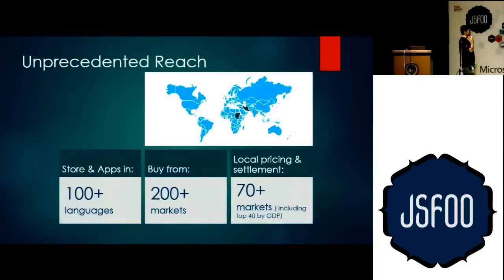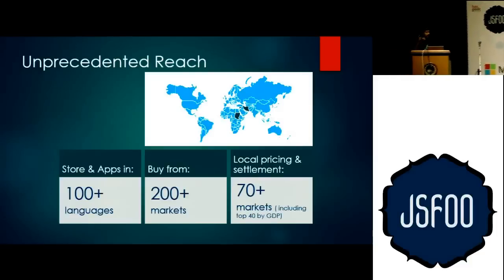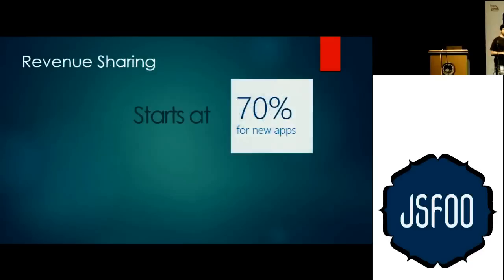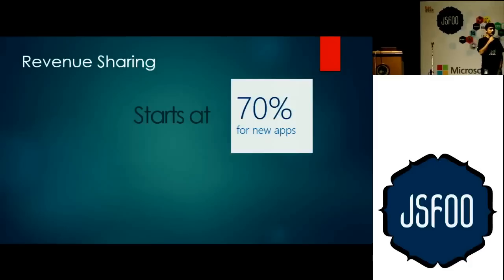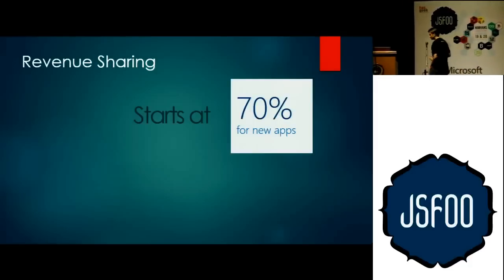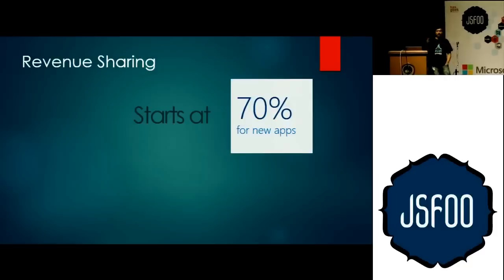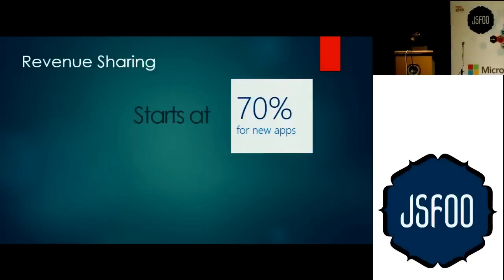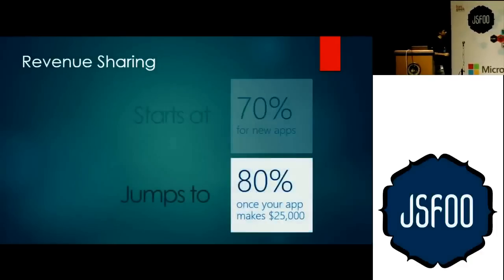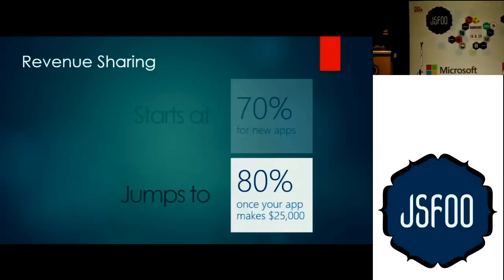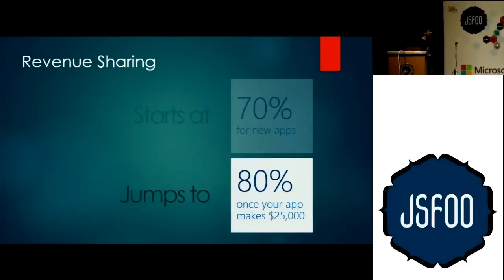Another thing different for the Windows 8 platform is the revenue model. When you build an application — whether paid or with in-app purchases — it starts at a 70-30 split: 70% for the app developer, 30% for Microsoft. Once your app revenue reaches a total of $25,000, that split changes to an 80-20 split. So the more successful your app is, the more successful you are.